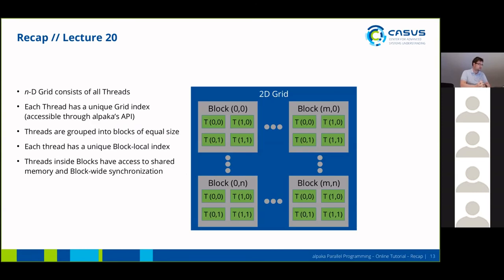A multidimensional grid consists of all threads running a kernel, and each thread has a unique grid index accessible through Alpaca's API. Threads are grouped into blocks of equal size, and each thread also has a unique block-local index, also accessible through Alpaca's API. Threads inside the blocks have access to fast, low-latency shared memory and block-wide synchronization.